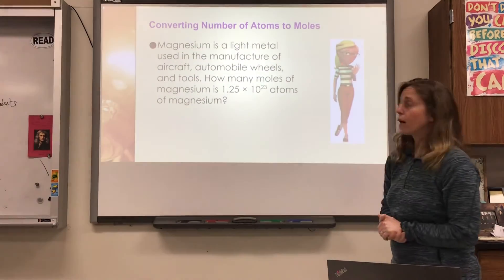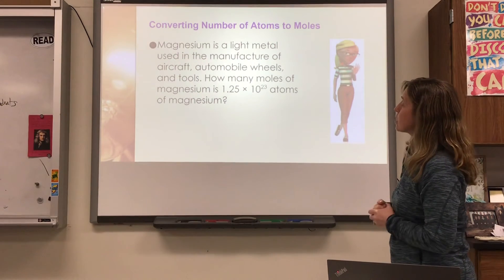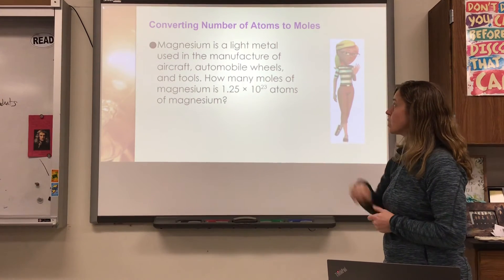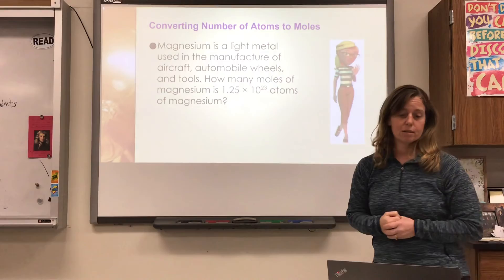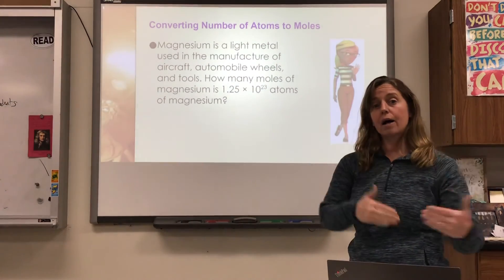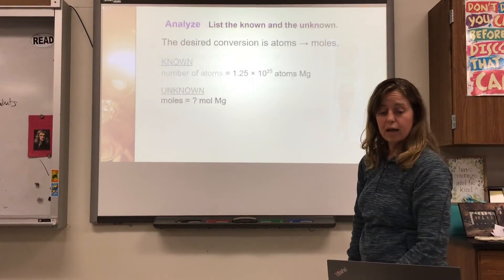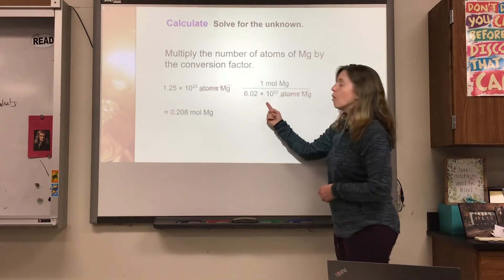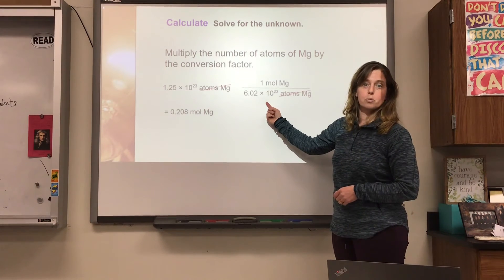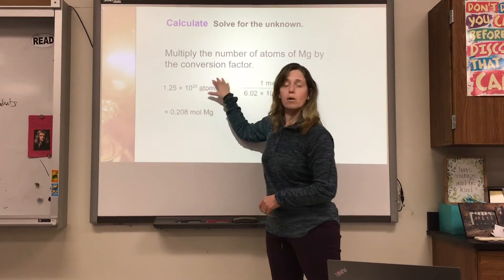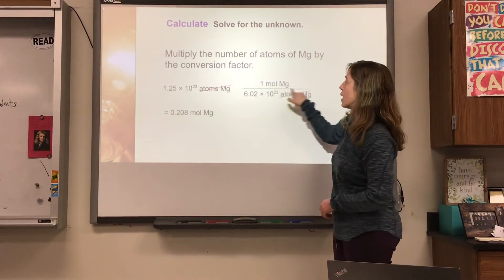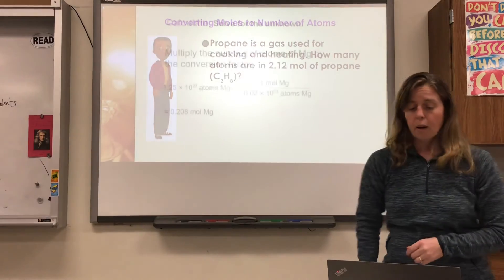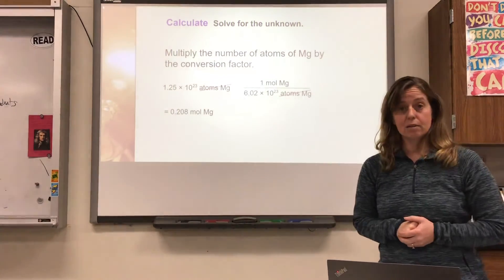Let's do a problem. Magnesium is a light metal used in the manufacture of aircraft, automobile wheels, and tools. How many moles of magnesium do I have if I contain 1.25 times 10 to the 23rd atoms of magnesium? I'm going from atoms to moles, so I use the conversion factor 1 over 6.02 times 10 to the 23rd. I multiply and get 0.208 moles of magnesium.